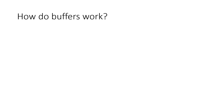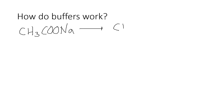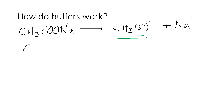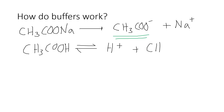The first thing to bear in mind in our buffer solution is that the salt — CH₃COONa — when it is in solution, fully dissociates into the ethanoate ion and the sodium ion in solution, which means there are lots of ethanoate ions floating around. You also have your ethanoic acid, which because it is a weak acid, partially dissociates into H⁺ ions and the ethanoate ion.